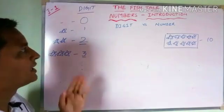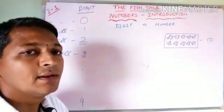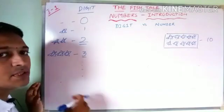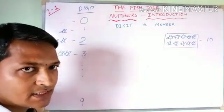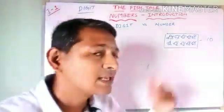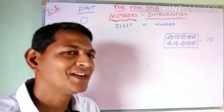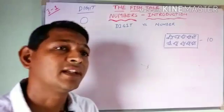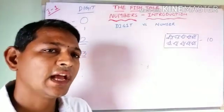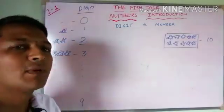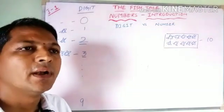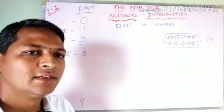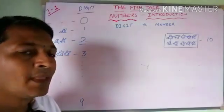Now you might have understood the difference between a digit and a number. Digits are limited — from 0 to 9, there are 10 digits. But numbers are unlimited. Just as in any language we have a fixed number of letters but the words formed from them are unlimited, the same applies here.